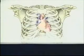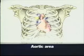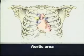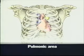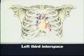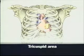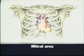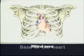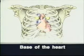You can hear S1 and S2 in the aortic area in the right second interspace close to the sternum, the pulmonic area in the left second interspace close to the sternum, the left third interspace, the tricuspid area in the left fourth and fifth interspaces, and the mitral area at the apical impulse. The aortic and pulmonic areas together are sometimes called the base of the heart.